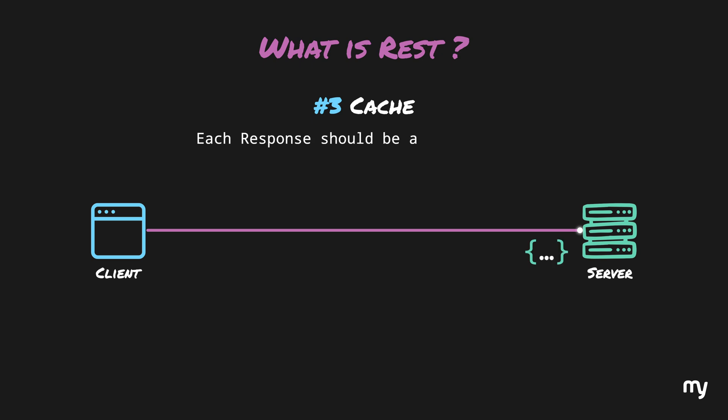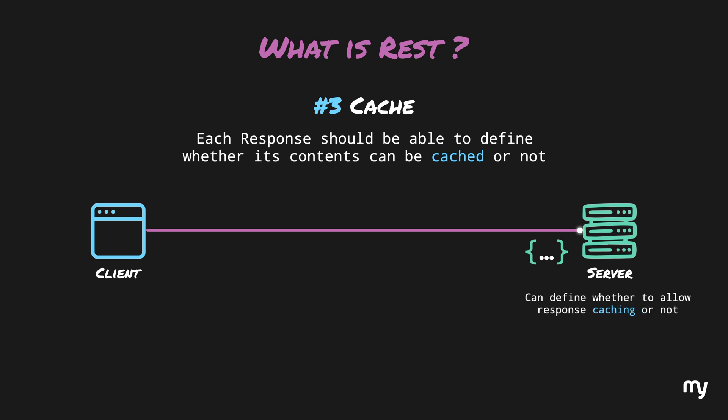The third principle is cache. Each response should be able to define whether the contents of the response can be reused by the client or not, which helps improve network efficiency. In the context of a browser, a website can define whether it allows the browser to cache the request. If yes, the browser can store the response and skip calling the server next time the request is made. If not, the browser sends the request to the server again.